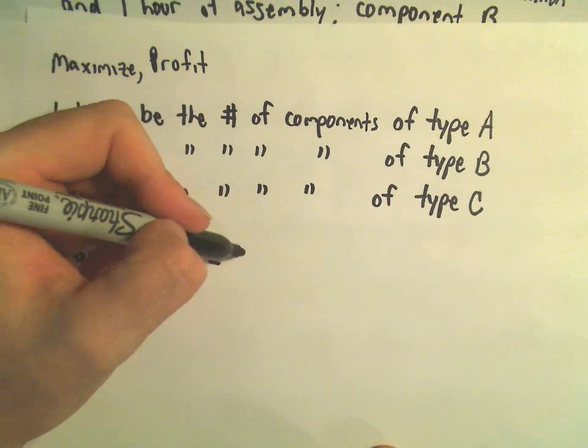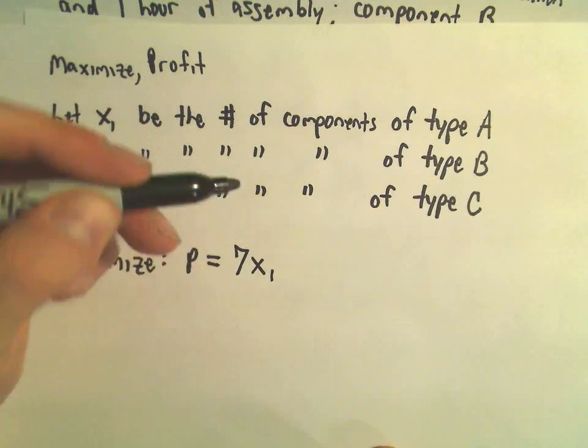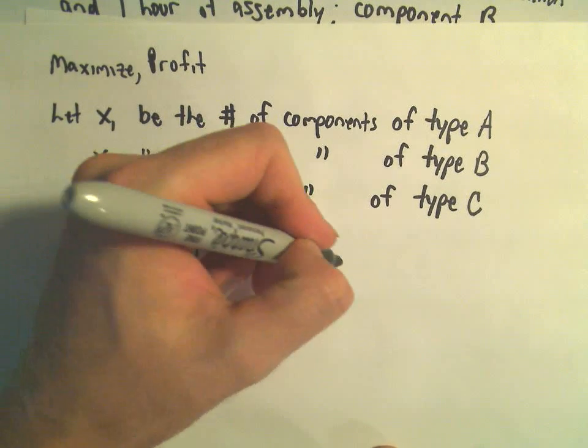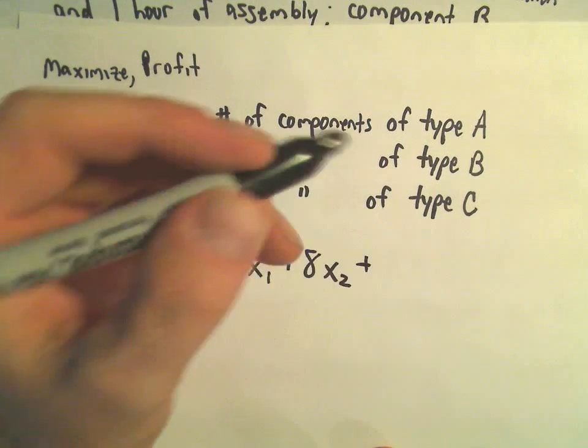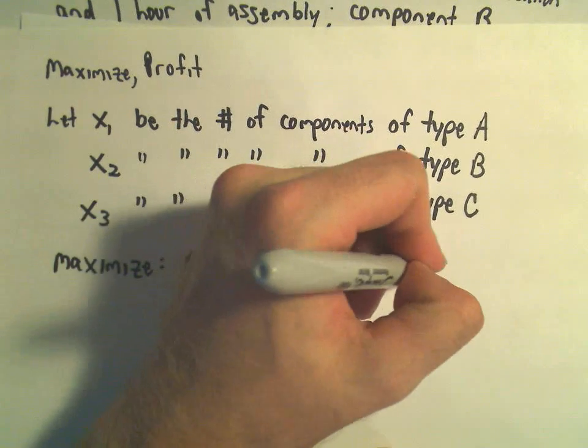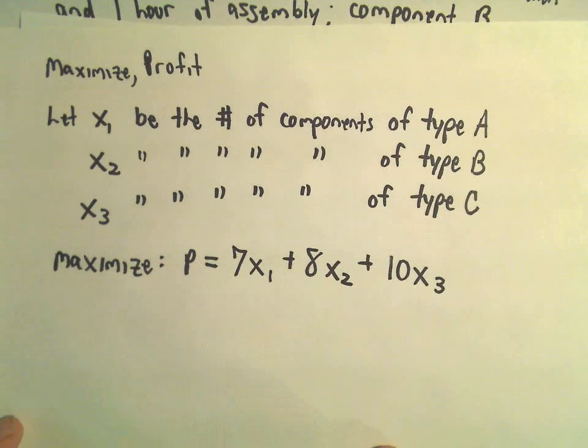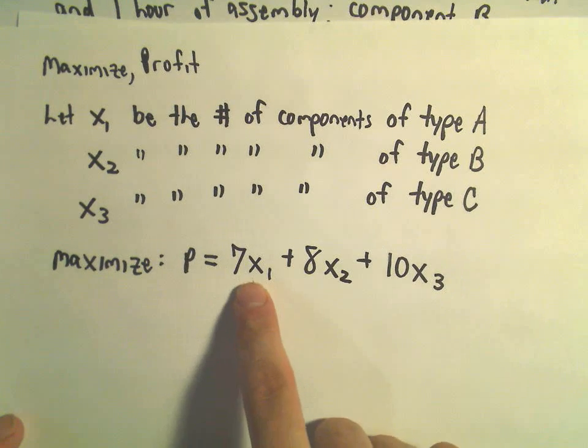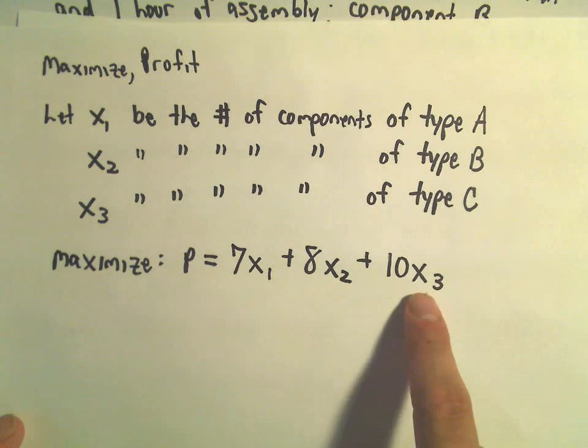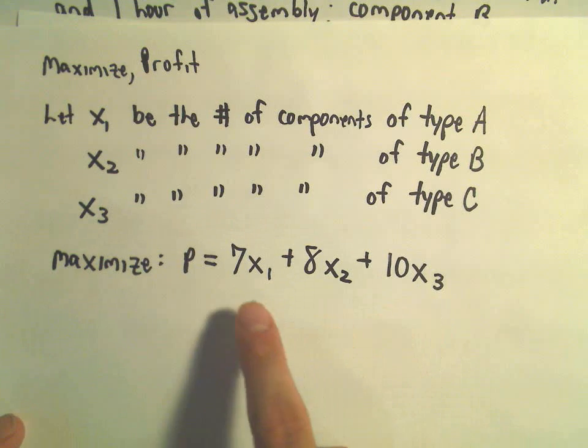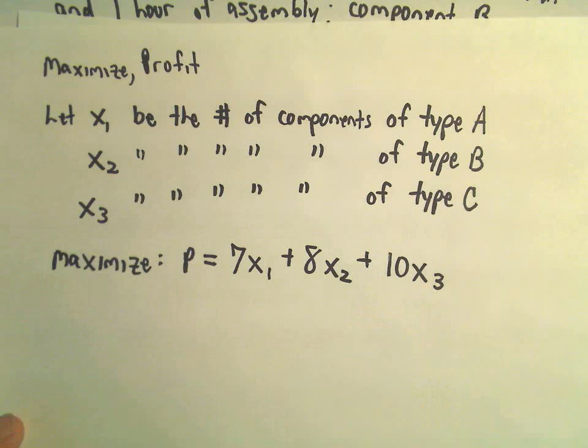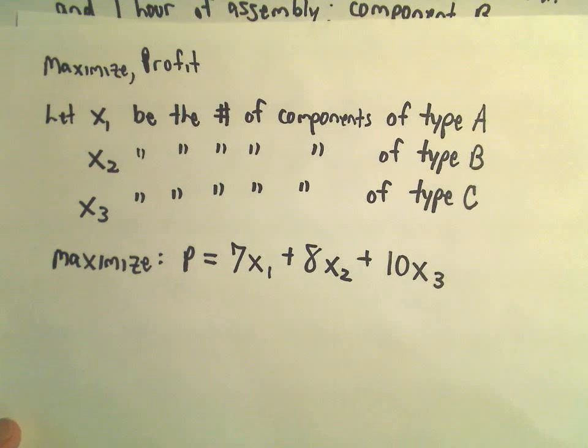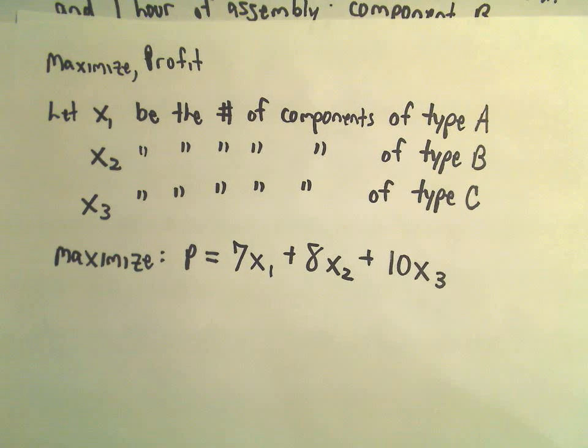We get $7 per each one of component A plus $8 per each one of type B, and $10 for each one of type C. So if we make x₁ of type A, x₂ of type B, and x₃ of type C, we'll multiply those respectively by 7, 8, and 10, add them together. That's the function we're going to have to maximize.